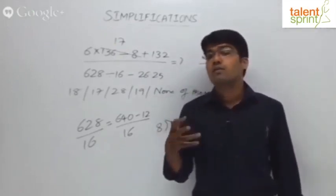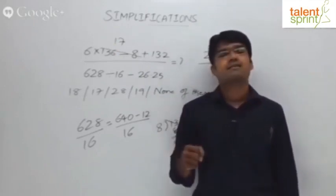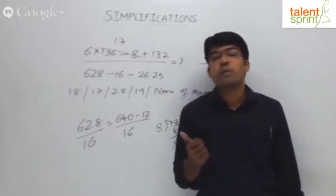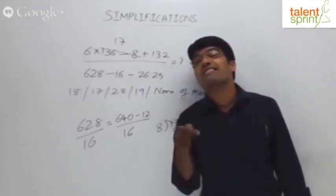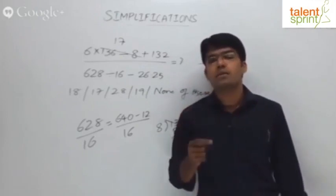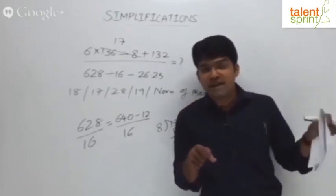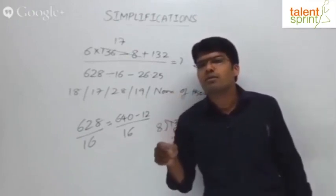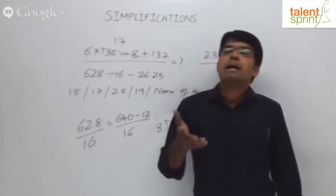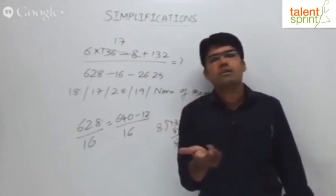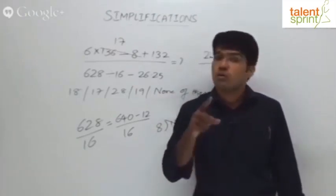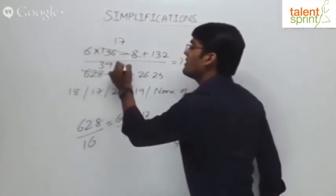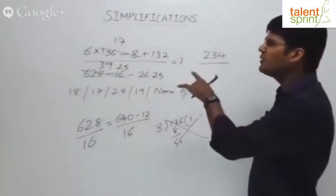How do you split 148? 148 divided by 16. 148 can be taken as 144 plus 4. Why 144 plus 4? Because I know 144 by 16 is 9. 16 times 9 is 144. So 144 by 16 is 9. Already we have 30 and 9, that's 39. What is left out? 4. 4 by 16 is 1 by 4, which is 0.25. 39.25. So either you split it this way or that way, finally you get 39.25 without writing anything on paper.